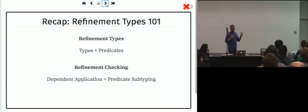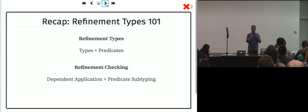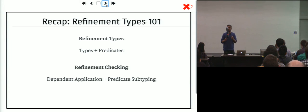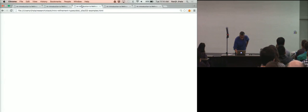That sums up phase one, Refinement Types 101. The high-level bits: refinement types are you start with base types, dress them up using logical predicates. The way you make refinement checking happen is predicate subtyping, which boils down to implication over these predicates, and dependent application that lets you build up the type for expressions from their components.